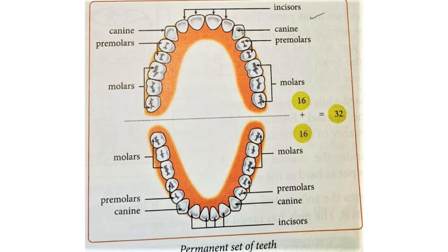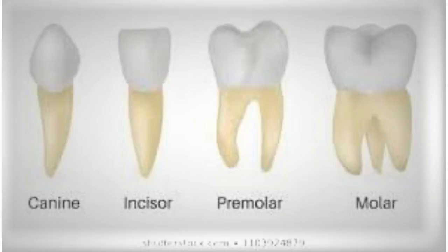Now, all our teeth are not of the same kind. They are of four kinds according to the types of work they do, like biting, tearing and chewing the food. The four types of teeth are incisors, canines, premolars and molars.